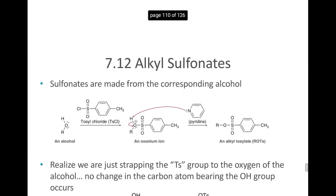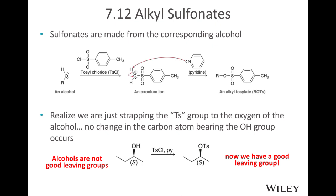So, how do you make a sulfonate — mesylate, tosylate, or triflate? They're made from a corresponding alcohol. The first step is a nucleophilic attack by the alcohol onto the tosyl chloride, mesyl chloride, or trifluoromethane sulfonyl chloride. You obtain an oxonium — that's an oxygen with a positive charge on it. Then pyridine acts as a base, taking the proton off the oxonium to give you the alkyl tosylate. The side products would be pyridinium chloride, which are water soluble and easily removed from the reaction mixture.